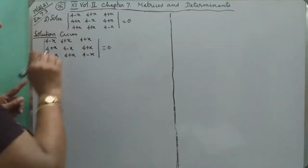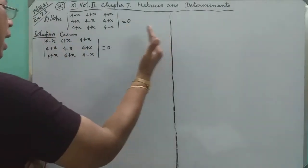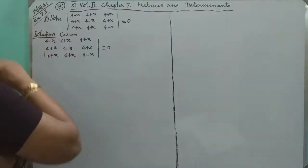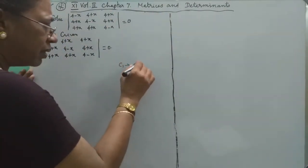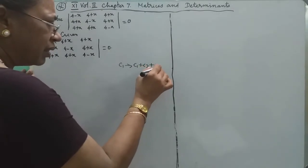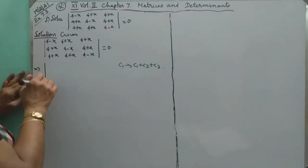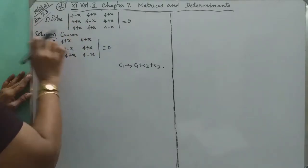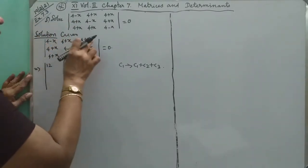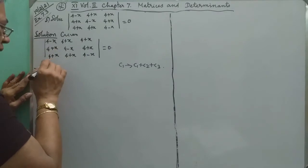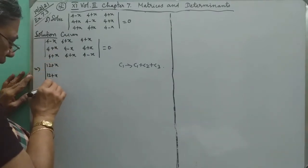If you look at this, you will see this full column addition. I will say that C1 becomes C1 plus C2 plus C3. Then this equation — the full sum: 4 equals 3 times 4, which is 12. So 12 plus x, then 12 plus x.